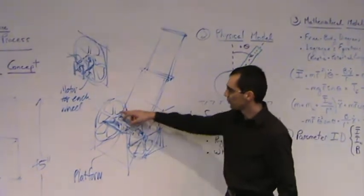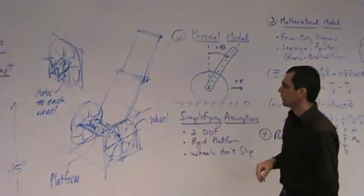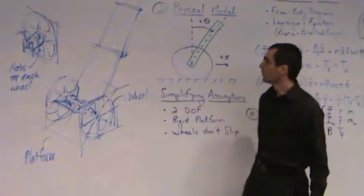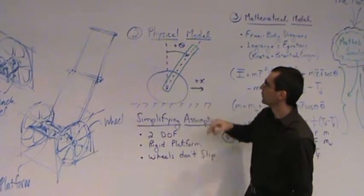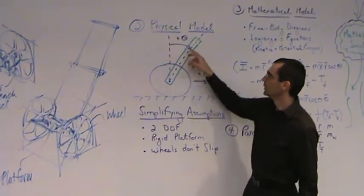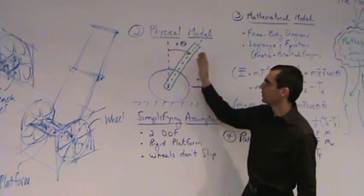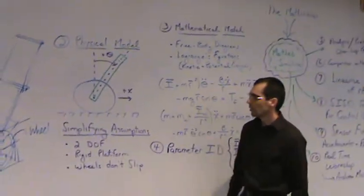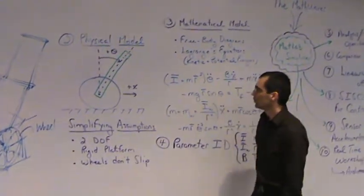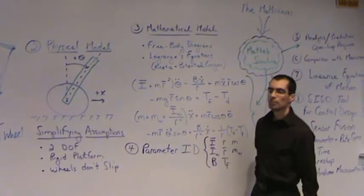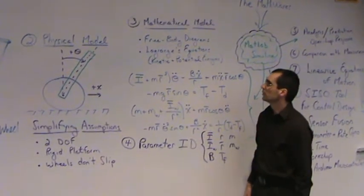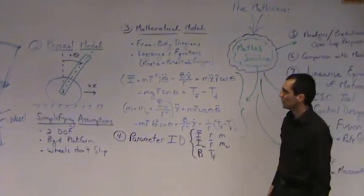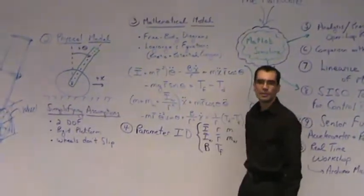That's our perspective of the system with the wheels and the pendulum. We developed a physical model where we have an angle theta that defines the angle of the pendulum, which can also move in the x direction. We made some assumptions and from those developed a mathematical model. That mathematical model gives us the equations of motion, which have all the parameters that characterize the system.